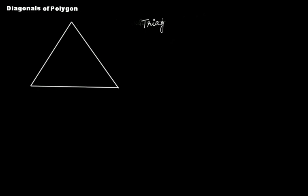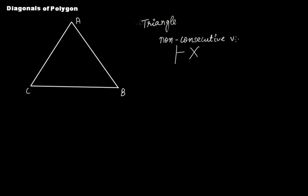This is a three-sided polygon — a triangle. Can you tell me the non-consecutive vertices in any triangle? In a triangle, if you name it ABC, you are not going to have any non-consecutive vertices. That is why triangles don't have any diagonals — a triangle doesn't contain any diagonal.